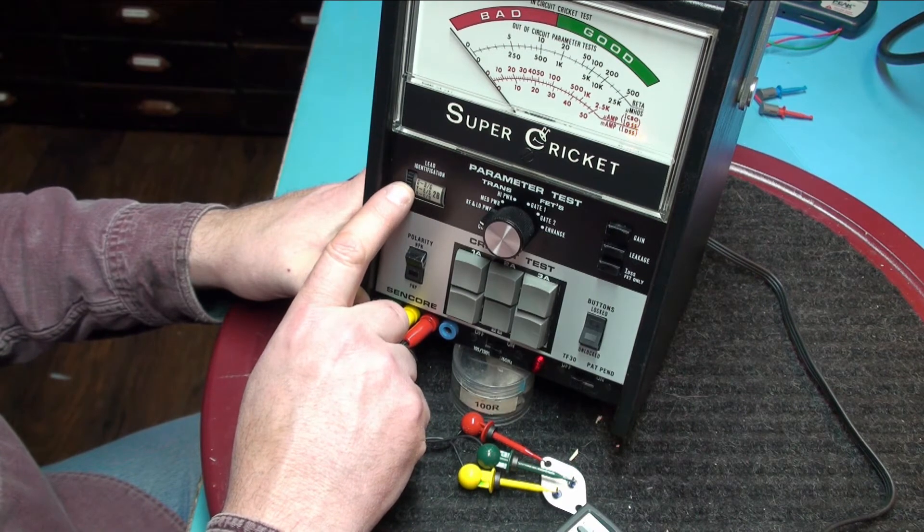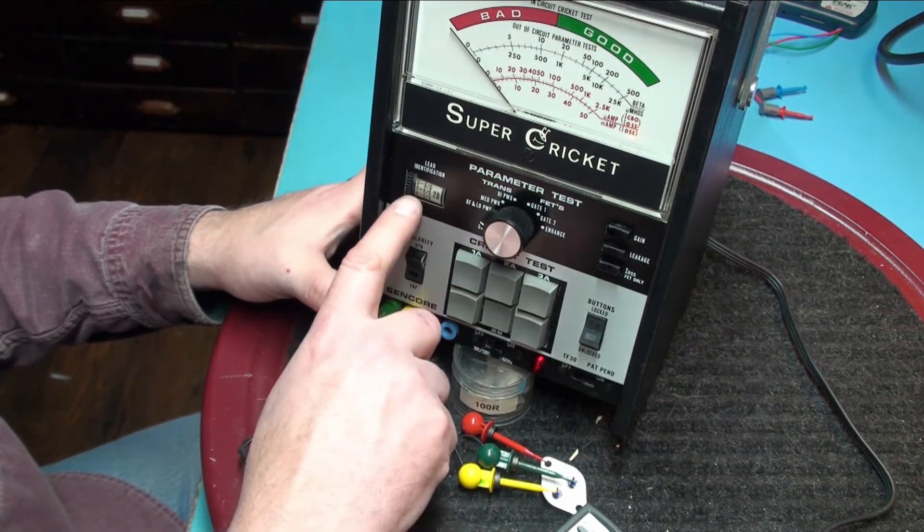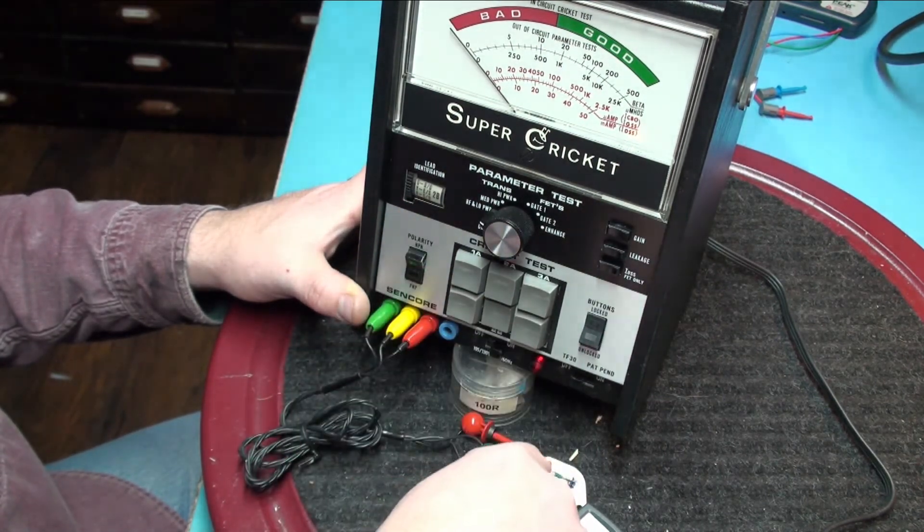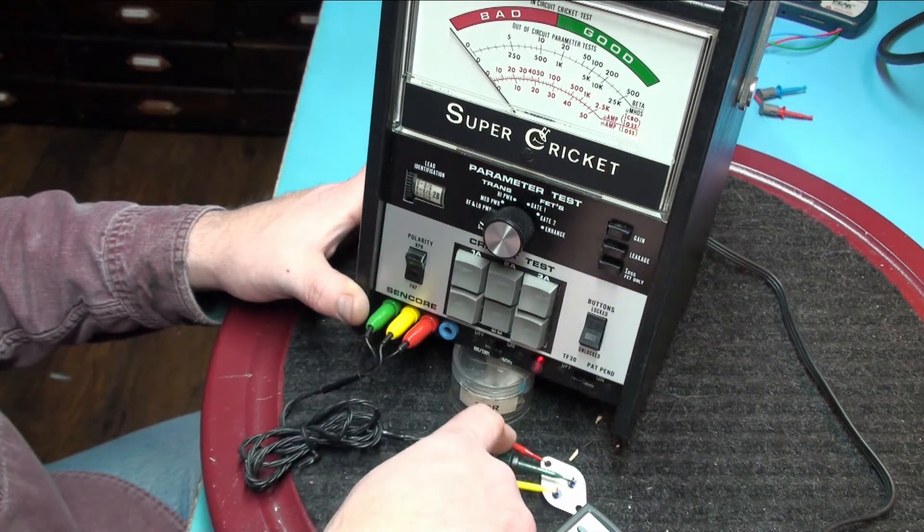So what it is telling me is green is the base, yellow is the emitter, and red is the collector.